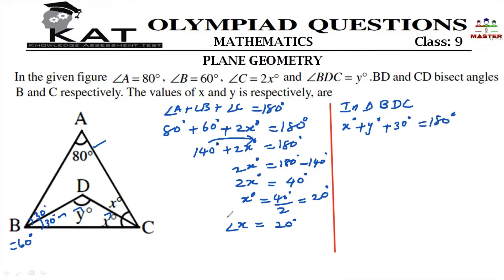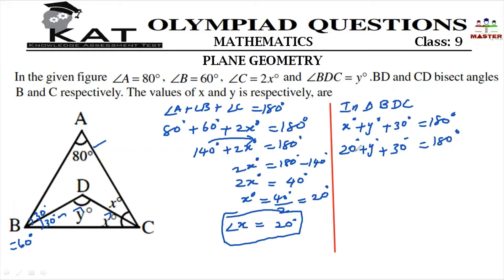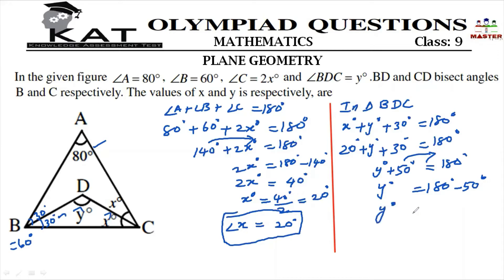We already know x is 20 degrees, so we substitute: 20 degrees plus y degrees plus 30 degrees is equal to 180 degrees. 20 plus 30 is 50 degrees, so y degrees is equal to 180 degrees minus 50 degrees. Therefore, angle y is equal to 130 degrees. Final answers: x is 20 degrees and y is 130 degrees.